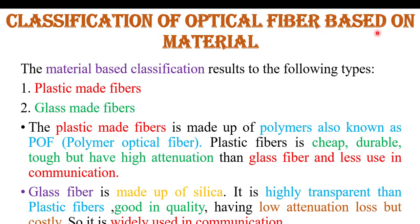First, classification of optical fiber based on material. Based on material, fiber is classified into two types: plastic fiber and glass fiber. Plastic fiber is made up of polymer optical fiber, also called POF. The characteristics of polymer fiber are that it is cheap, durable, and tough, but it has less transparency compared to glass fiber, so it has higher attenuation losses and is less used in communication.